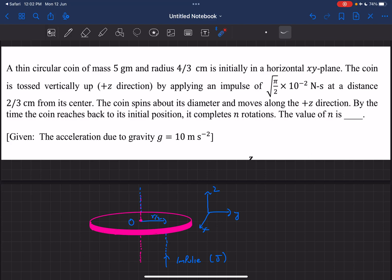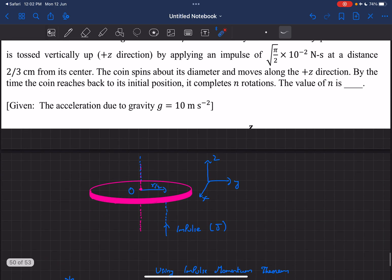Hey everyone, in this video we'll be solving this problem that came in JEE Advanced 2023 Paper 2. In this problem, we are given a circular coin that is tossed up in the air by imparting an impulse, but in this case the impulse is offset by a distance of r/2 from the center.